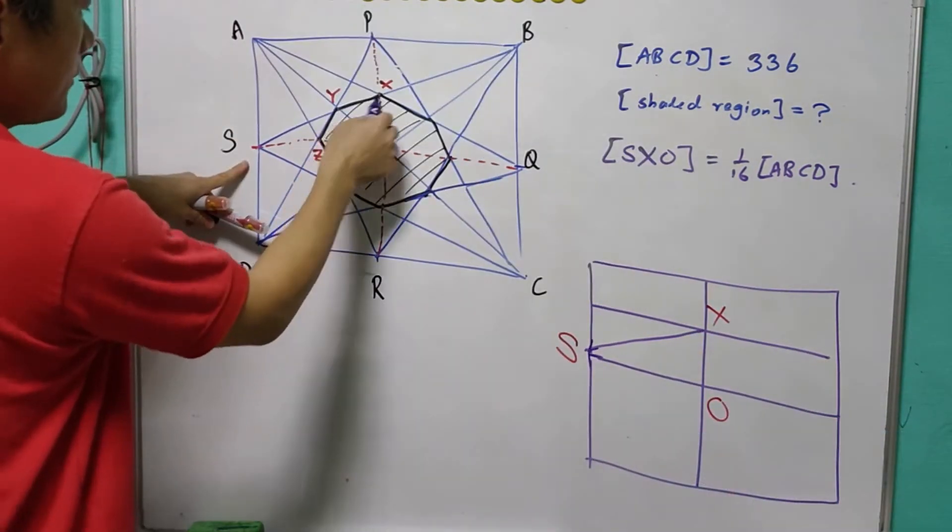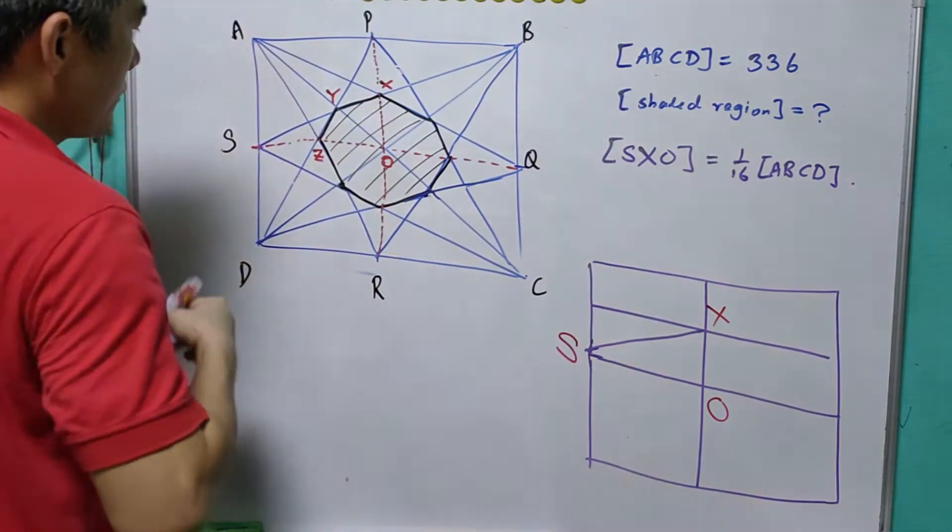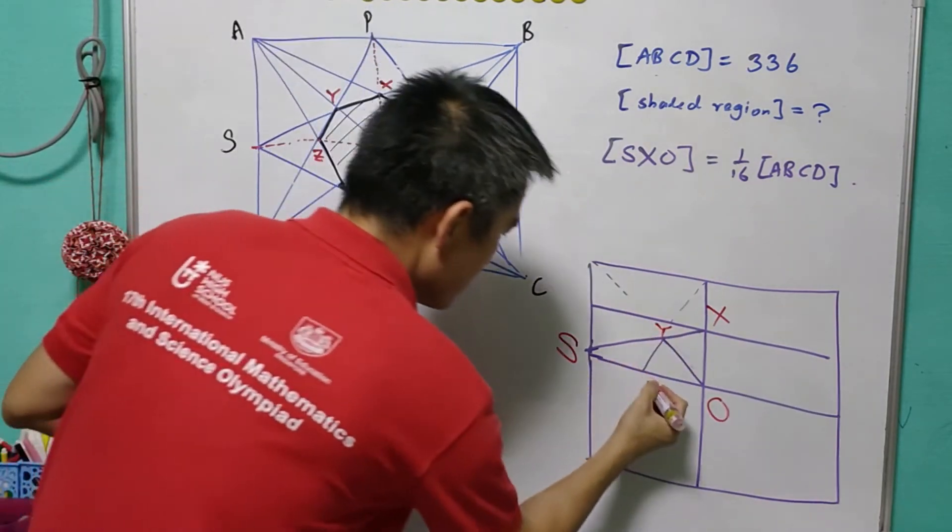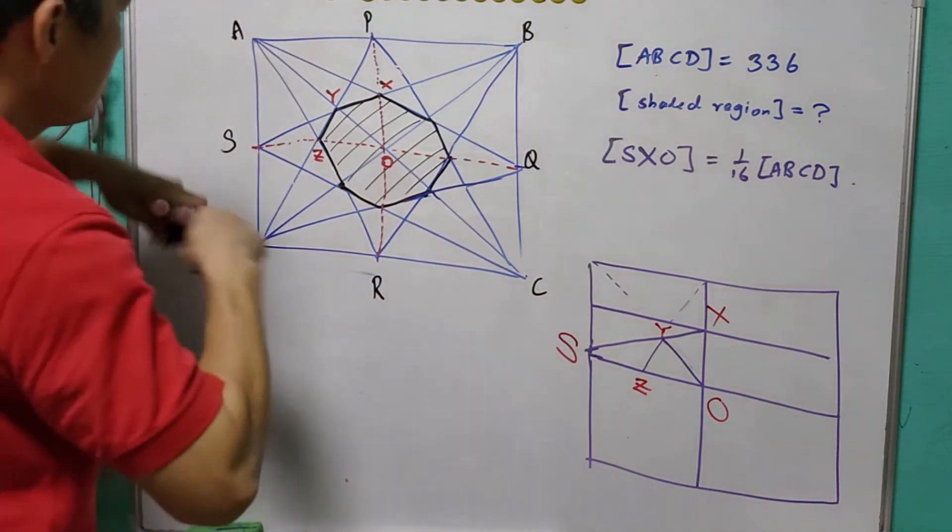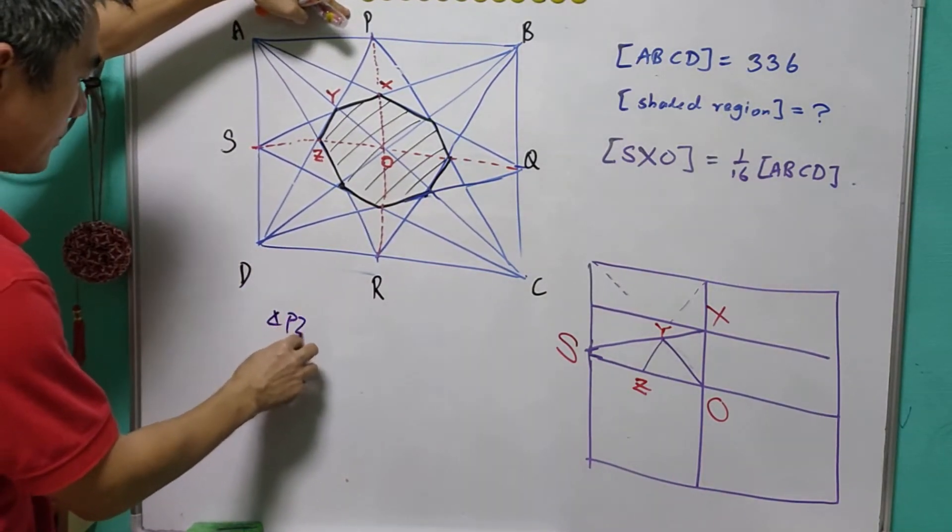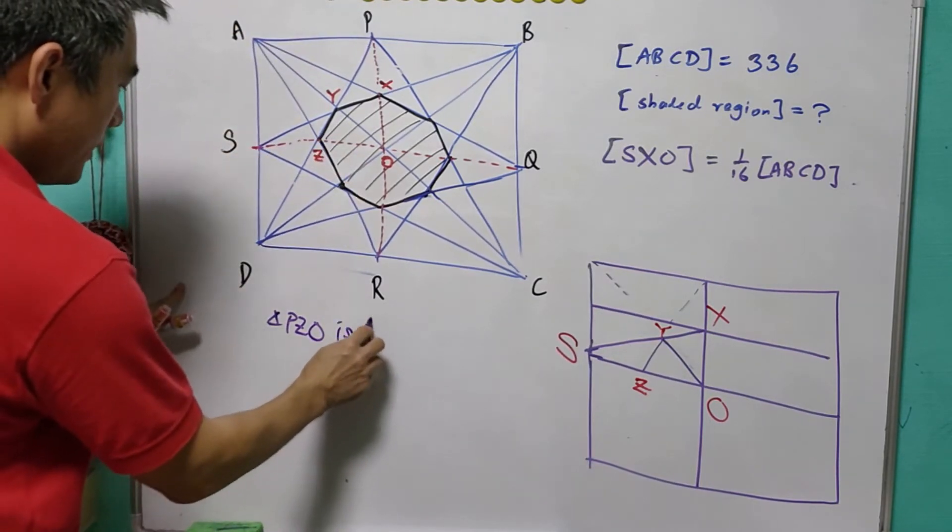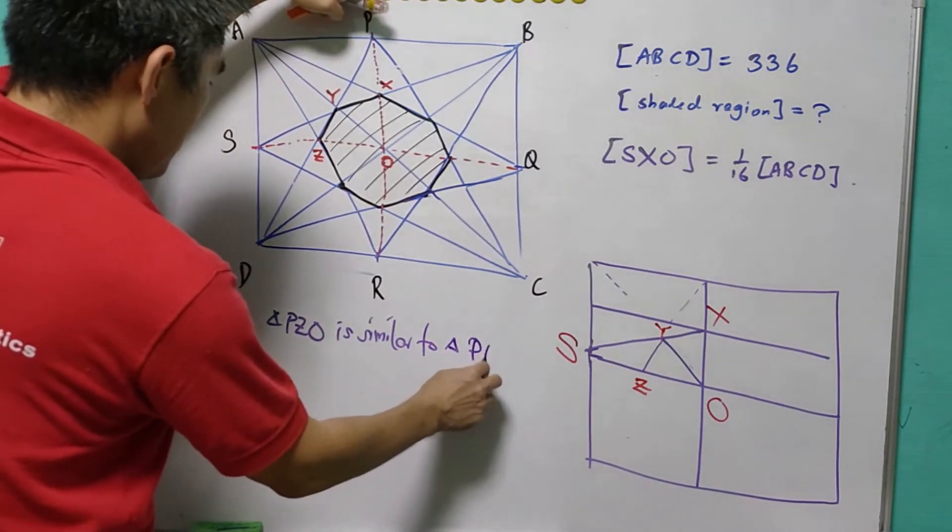It is further cut into 3 portions. This is Y, and this is Z. Now, note that the triangle PZO is similar to the triangle PDR.